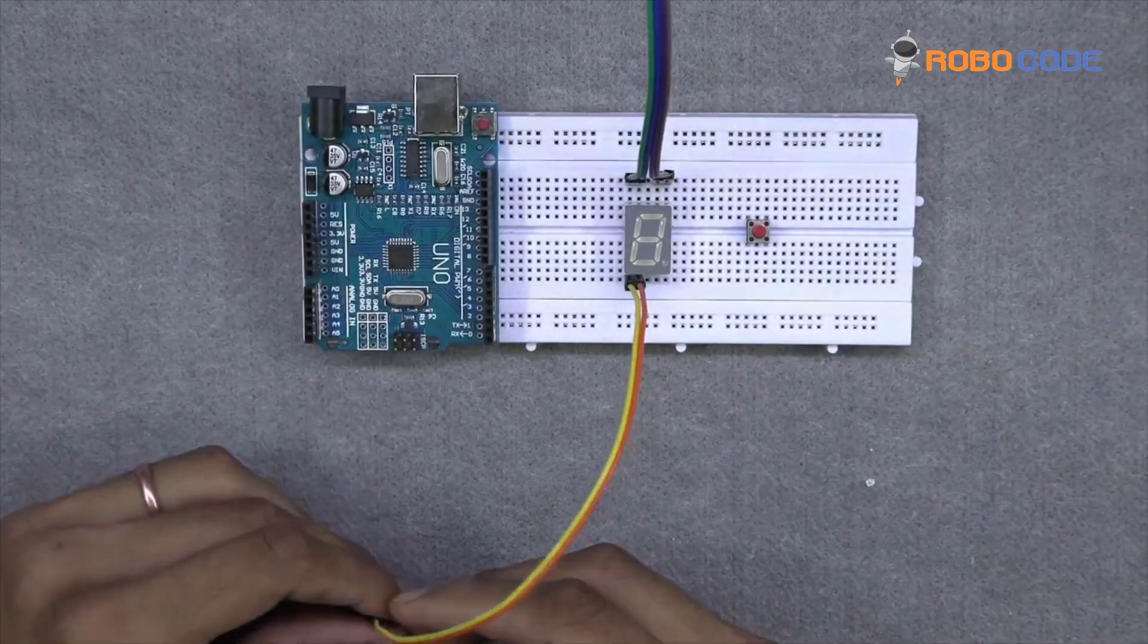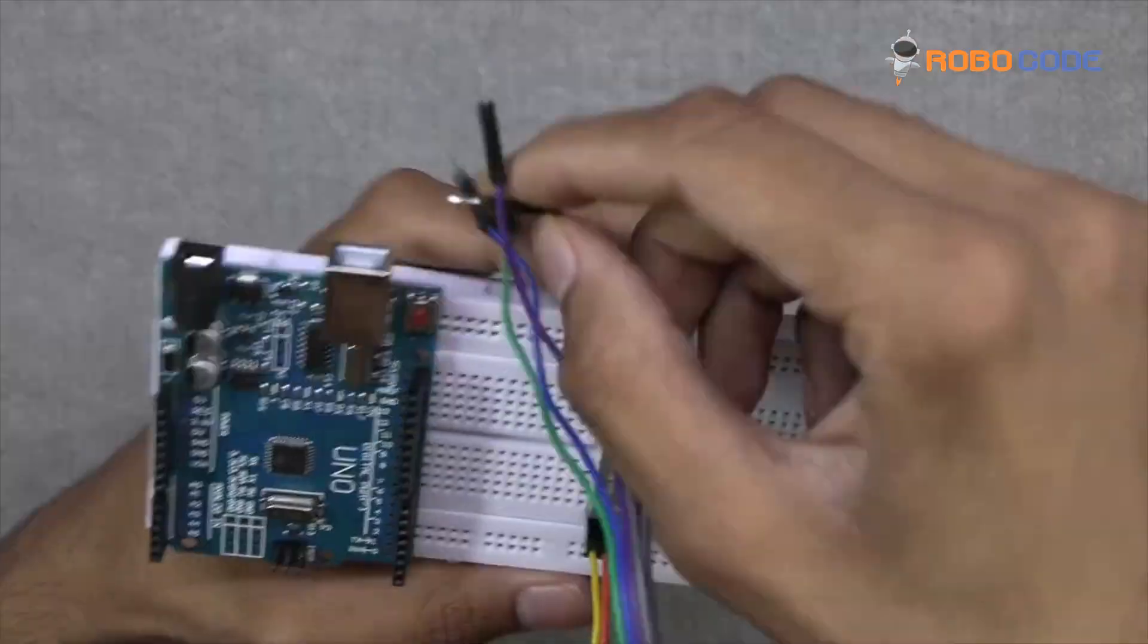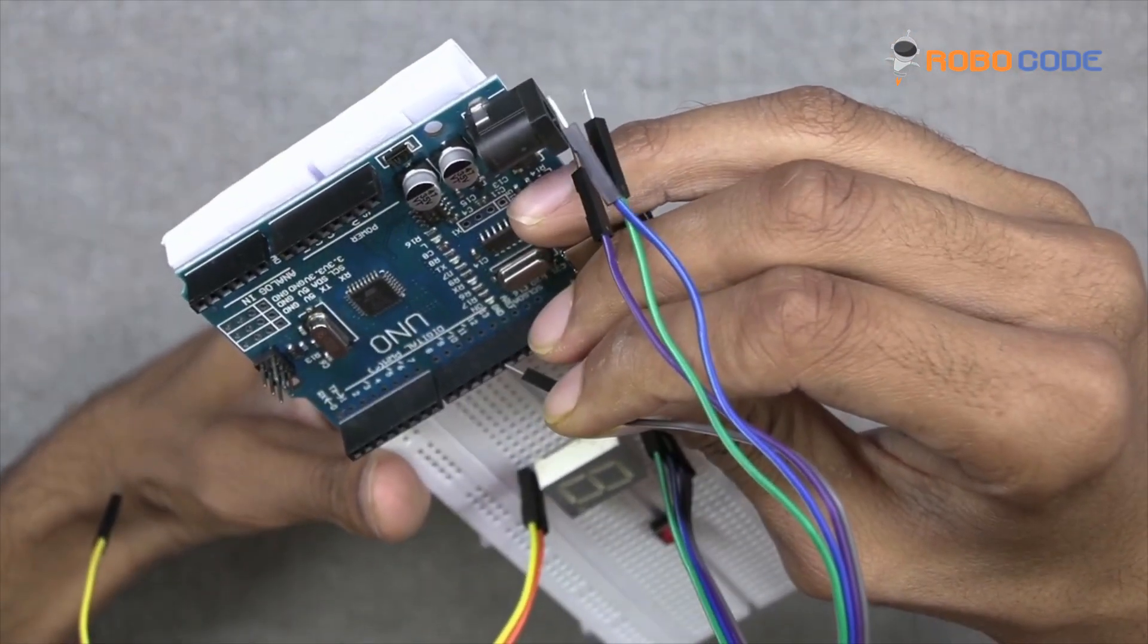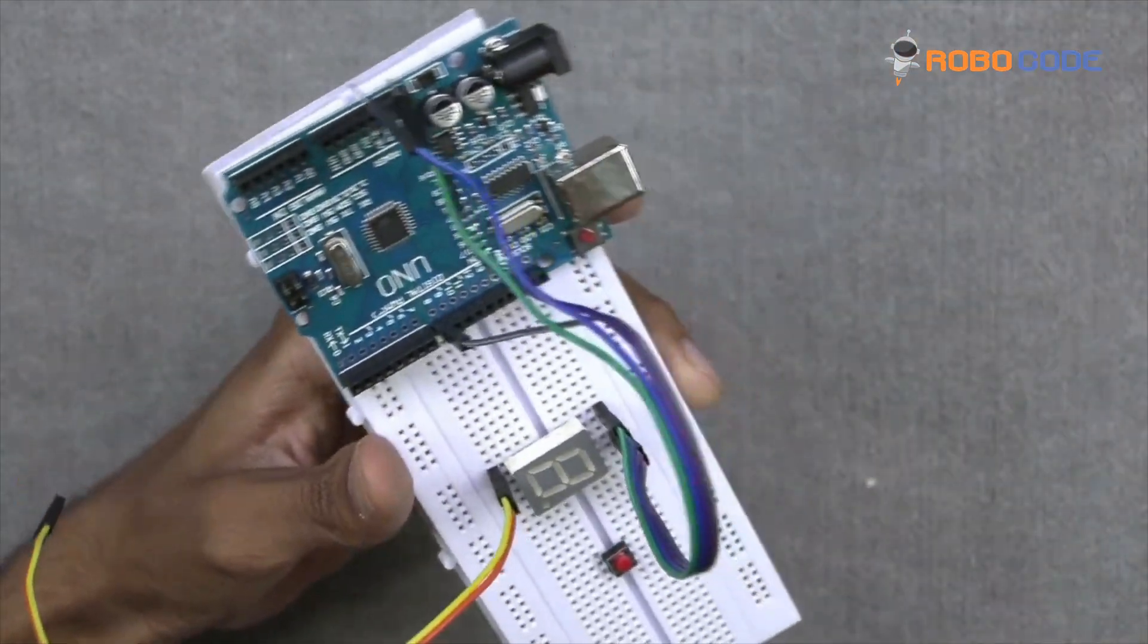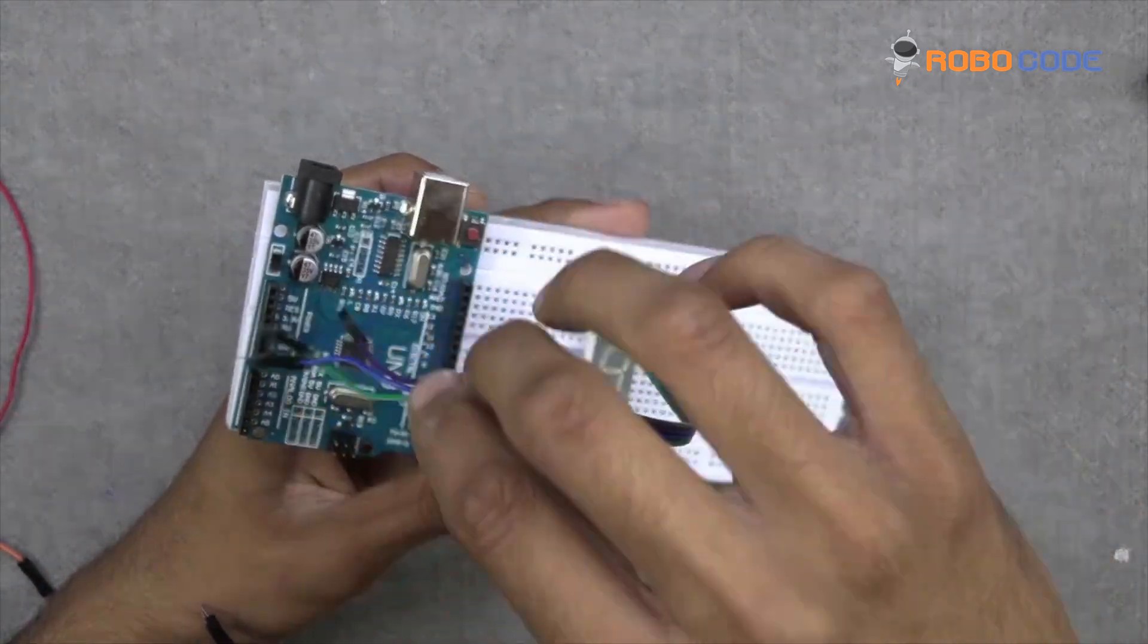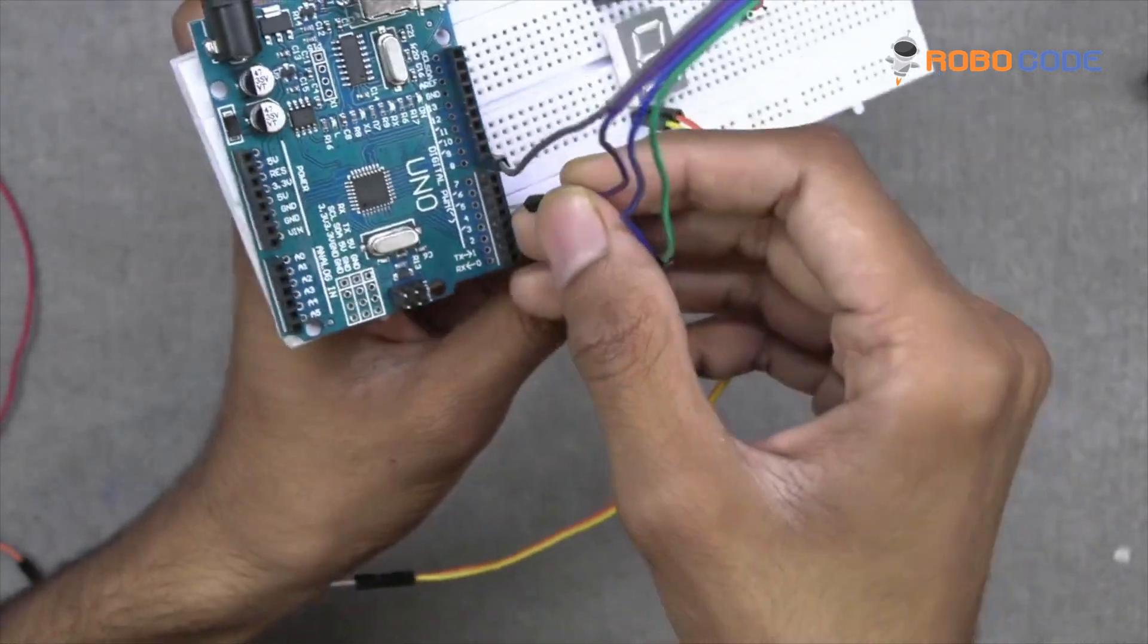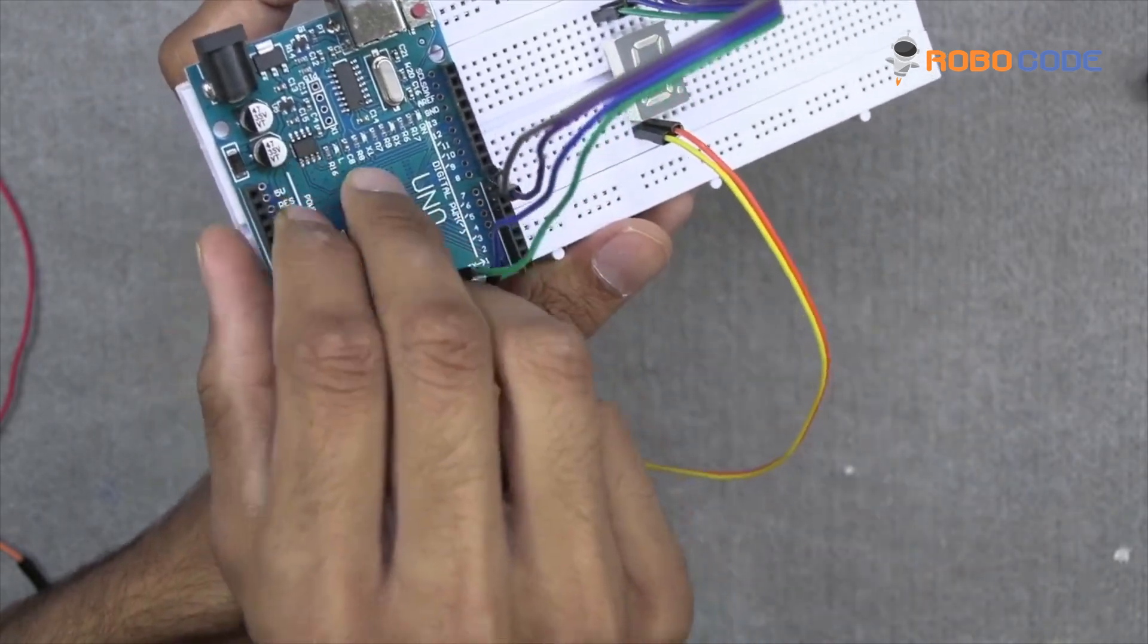Once that is done, we will take the grey wire. Take the purple wire and insert it on the 8th pin on the Arduino. Once that is done, take the purple wire and insert it on pin 7.